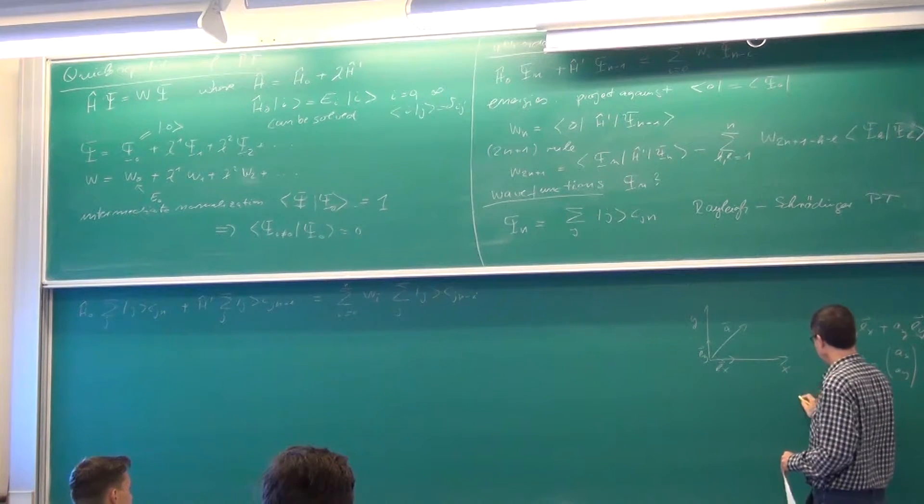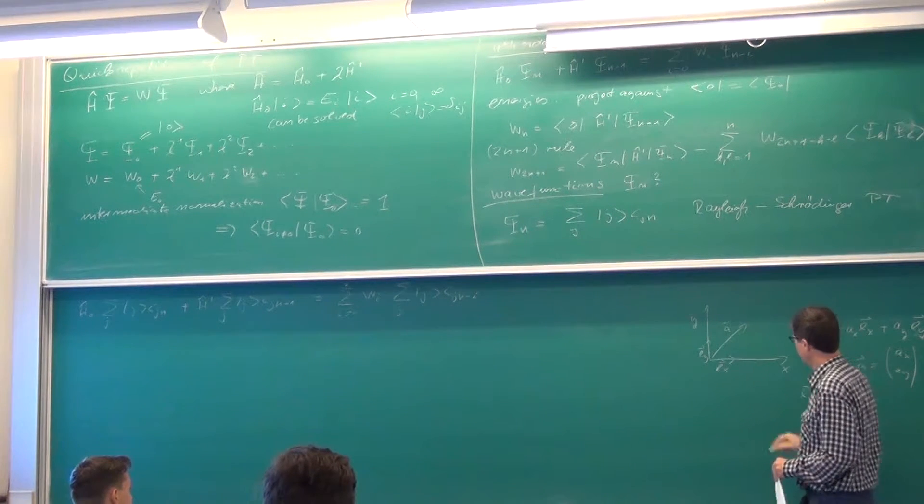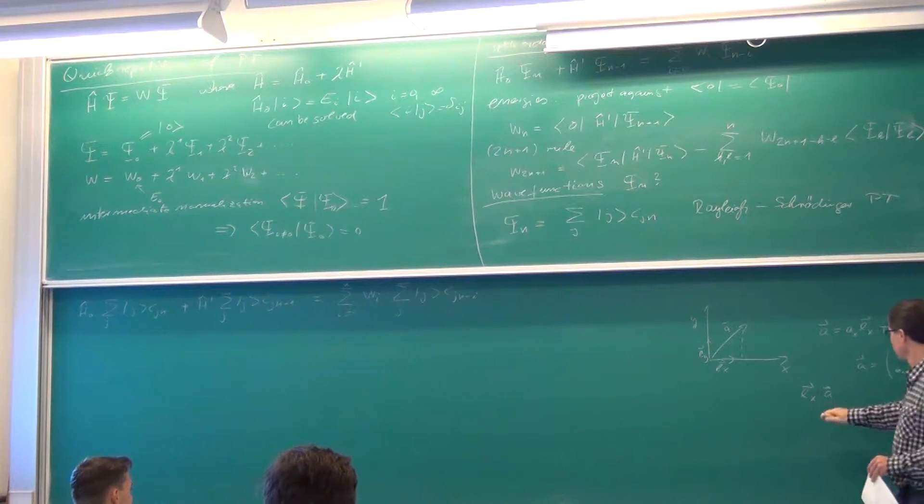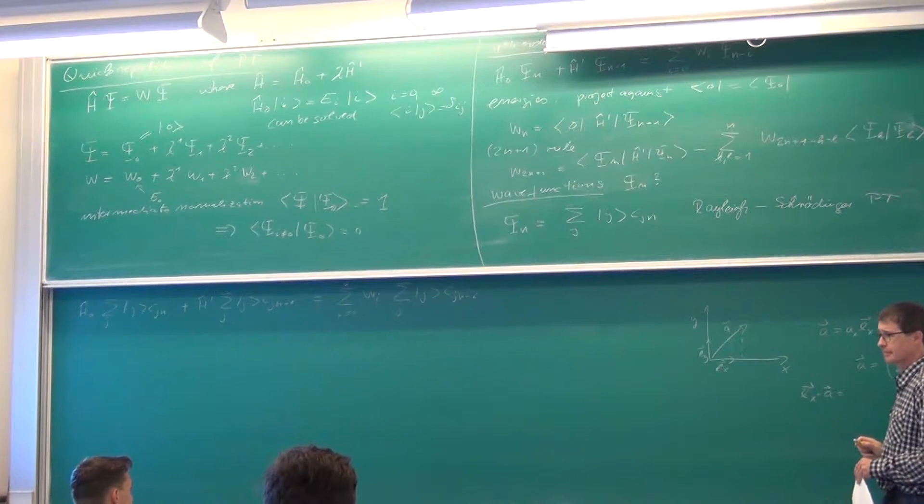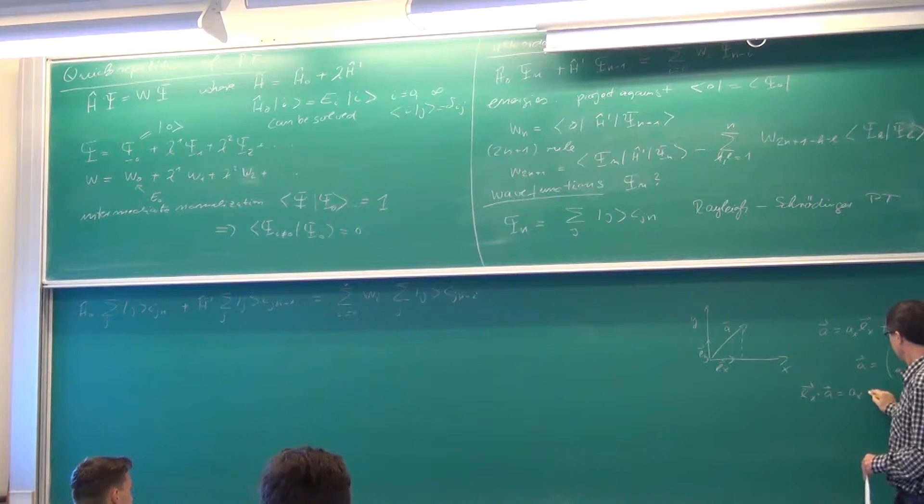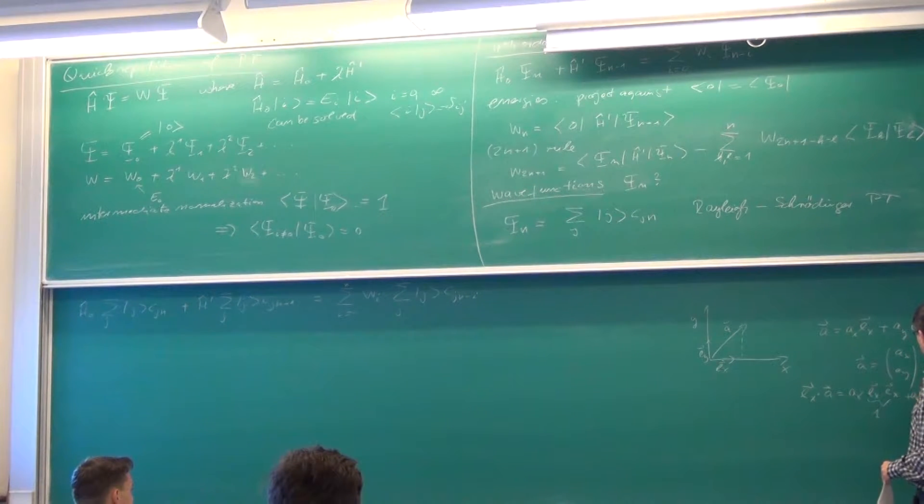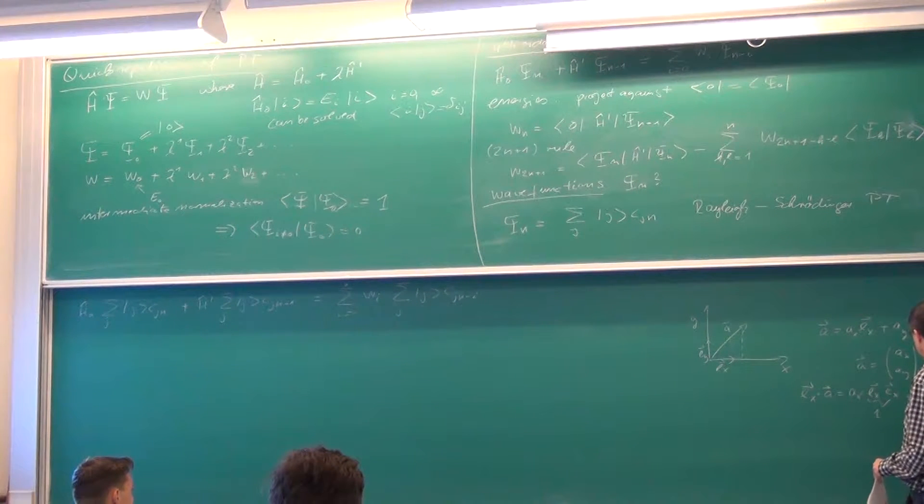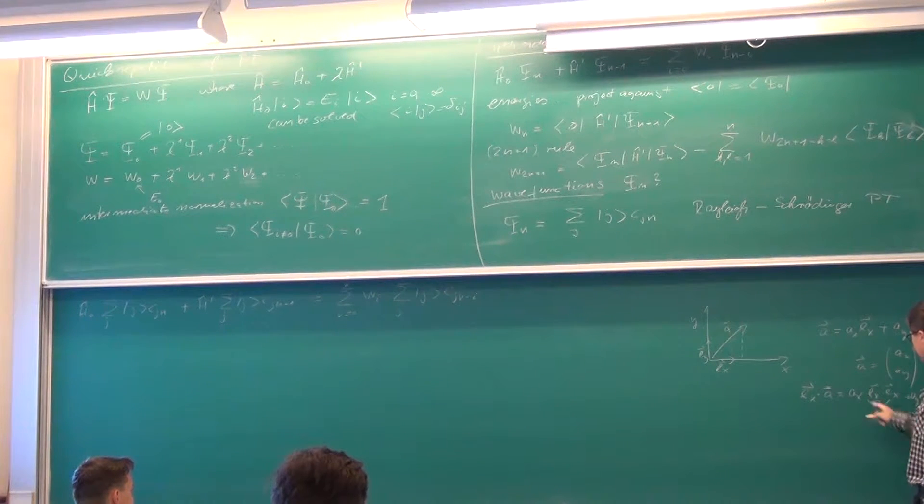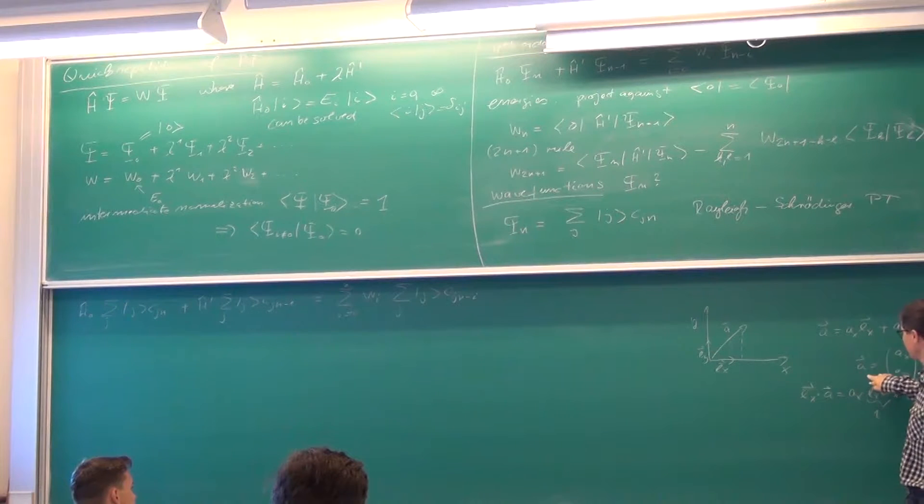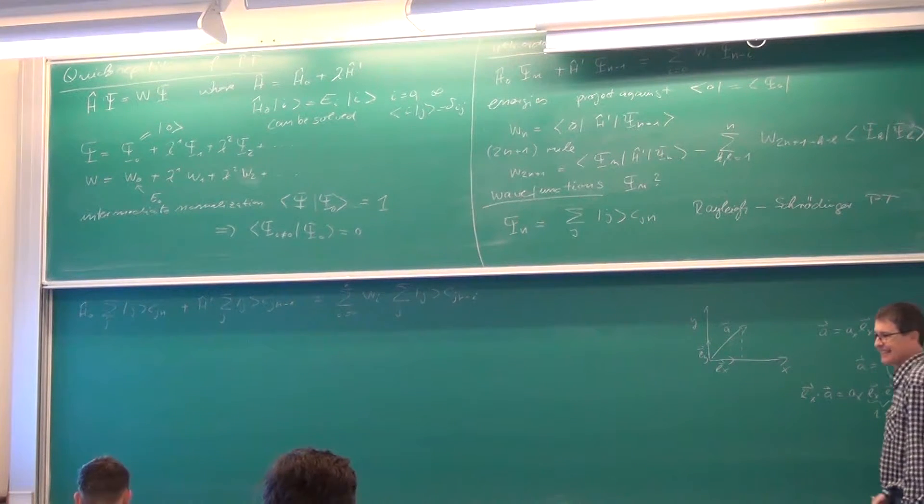Well, I do what Jack said before. I take the dot product with, I project on the axis. I take the dot product on the axis, which is taking the dot product with the unit vector. Because when you do that here, you get ax times the dot product of the unit vector with itself, which is 1, plus ay, the dot product of the two unit vectors, but they are orthogonal. Which is 0. So, what comes out is ax. So, in order to get the coefficient in front of one of the basis vectors, I have to take the dot product of my vector with that basis vector. So, projecting against a particular basis vector will give me that coefficient.